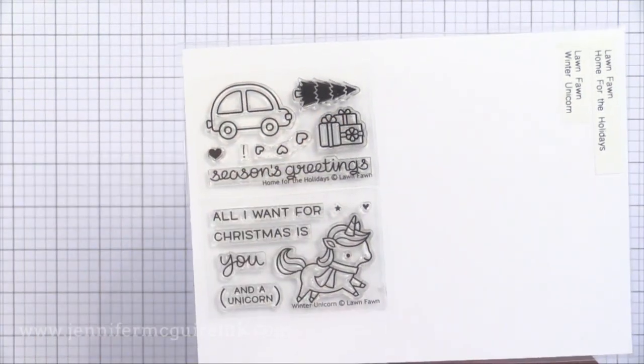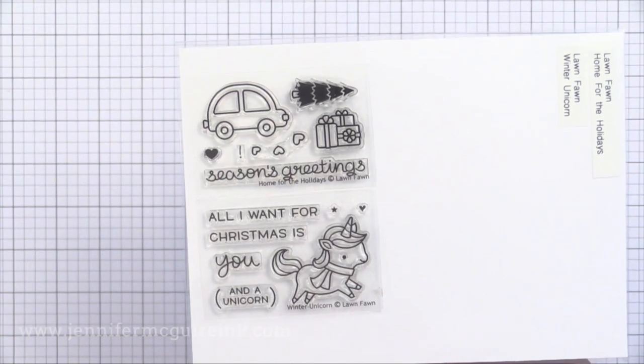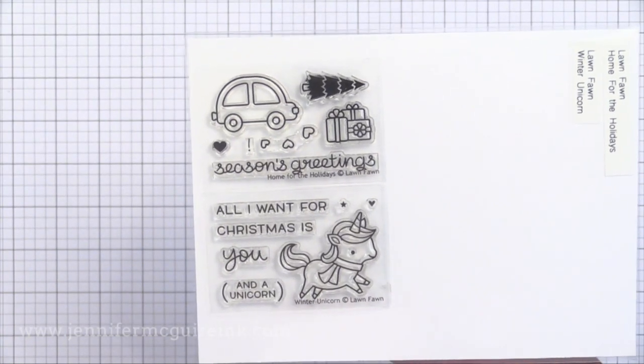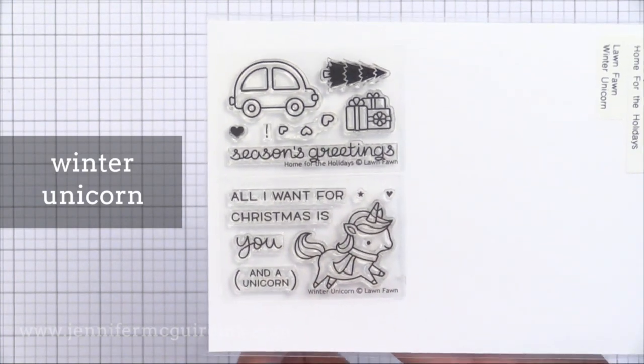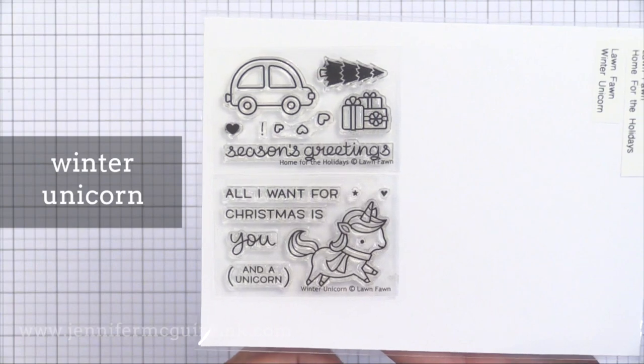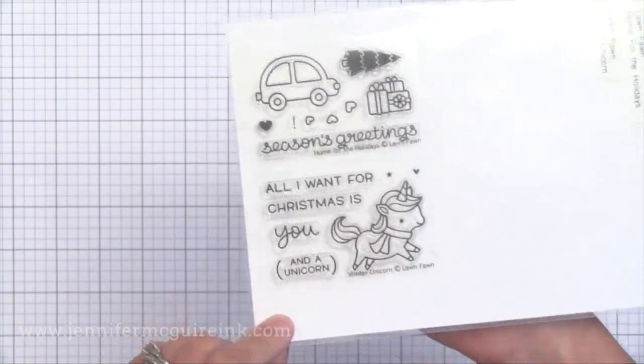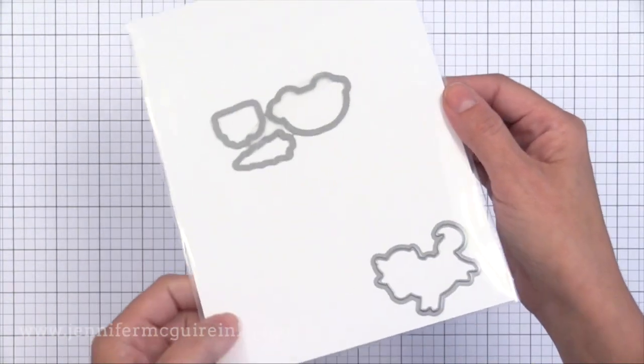So two super small stamp sets from Lawn Fawn this time. The first one is Home for the Holidays. You can put the tree on top of the car, the presents on top of the car. You can do other things with that car also. Then the Winter Unicorn. This is adorable for just a sweet little card during the holiday season. And there are coordinating dies available for these tiny little sets.